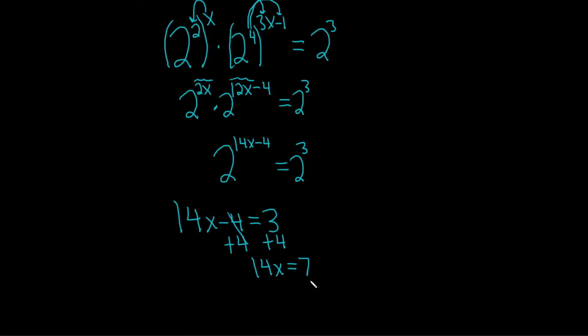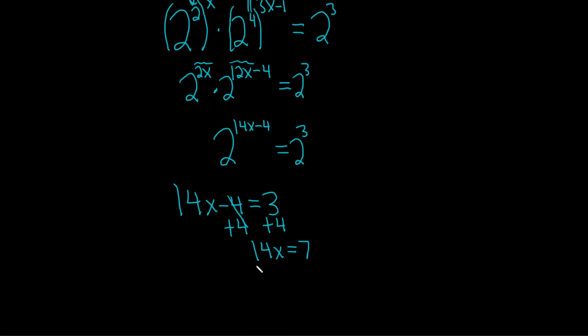Almost there, we just have to divide by 14 now. So divide by 14, divide by 14. 7 over 14. Let's see, 7 goes into 7 one time, and goes into 14 twice. So we get a wonderful answer of x equals 1 half. I hope this video has been helpful.